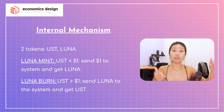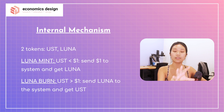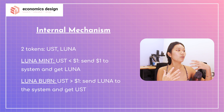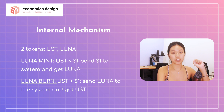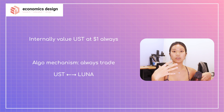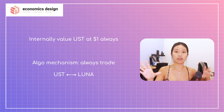When UST is above $1, you buy Luna from somewhere or use Luna you already hold, go into the system, give Luna, and the system will give you UST. Then you go to the open market and sell UST at maybe $1.10, but you acquired it for $1. That's how the internal mechanism works to balance the price of UST. Internally, the system will always value UST at $1, and Luna at whatever the market price is.